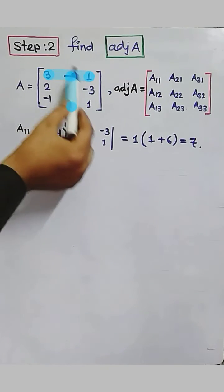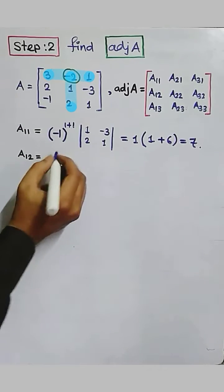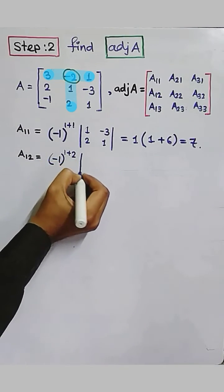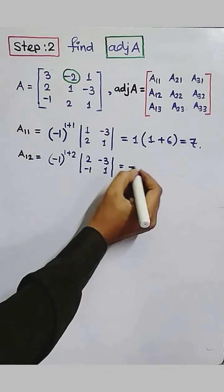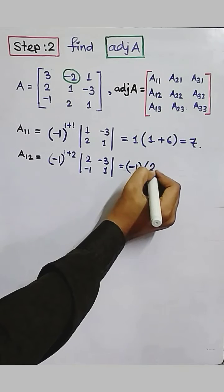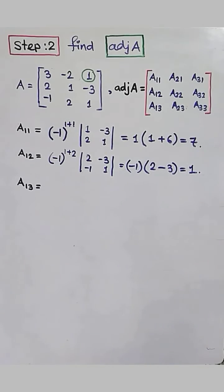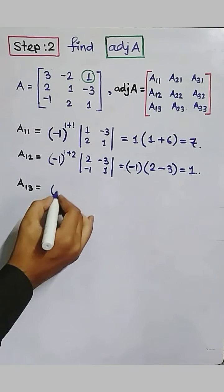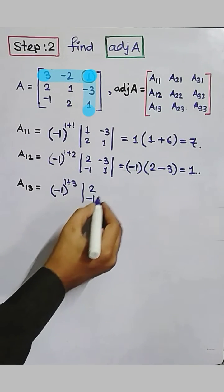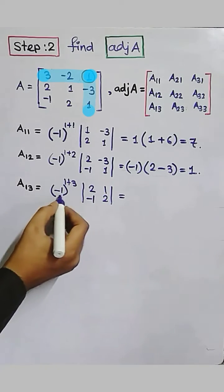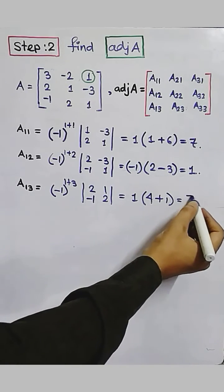A12 is the cofactor of minus 2: minus 1 to the power 1 plus 2, with first row second column cancelled. Minus 1 to the power 3 equals minus 1, and the determinant gives 2 times 1 minus (minus 3 times minus 1) equals 2 minus 3 equals minus 1. So A12 equals minus 1. A13 is the cofactor of 1: minus 1 to the power 1 plus 3, first row third column cancelled, determinant [2, 1; minus 1, 2]. Minus 1 to the power 4 equals 1, and 2 times 2 minus (minus 1 times 1) equals 4 plus 1 equals 5. So A13 equals 5.